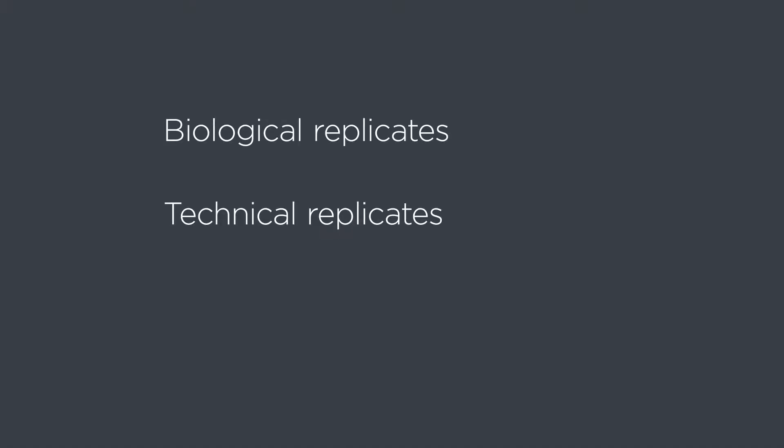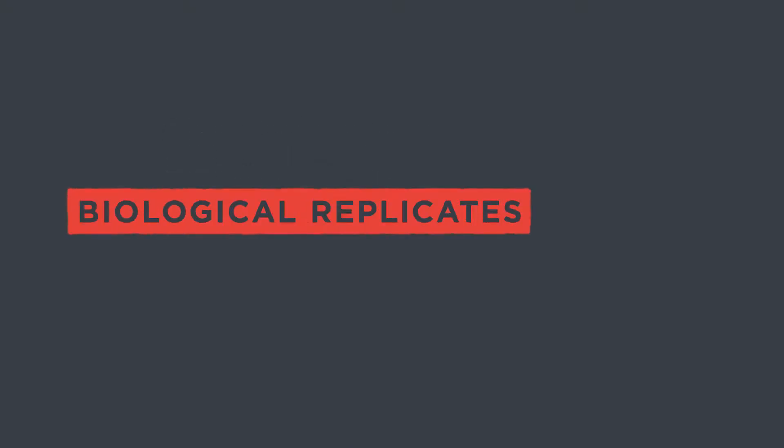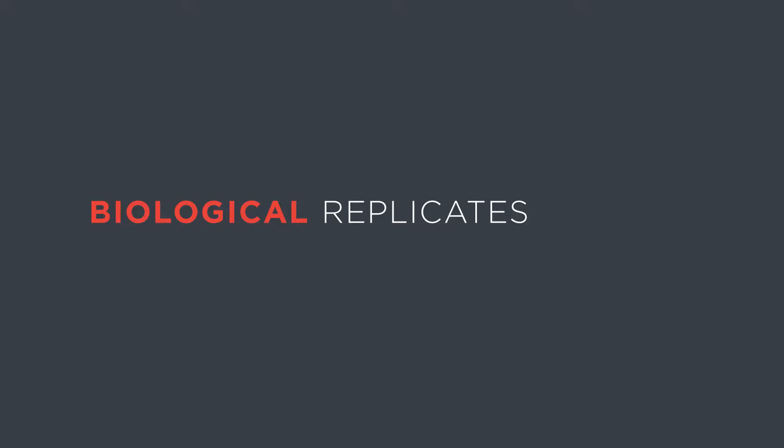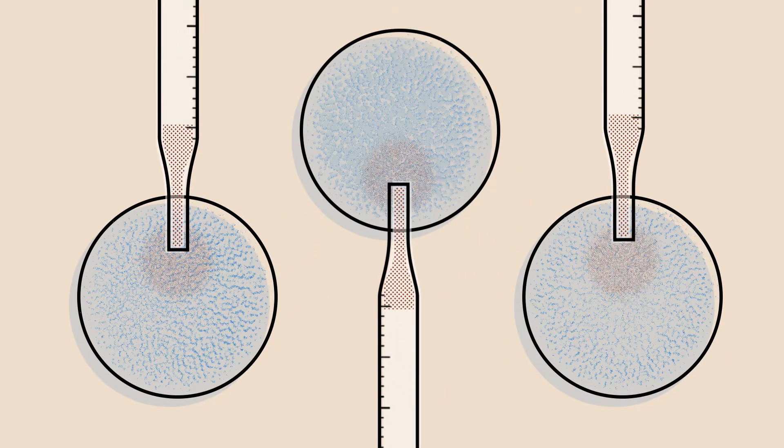Replication comes in many forms: a biological replicate, a technical replicate, and a repeat or independent experiment. Biological replicates are parallel measurements of biologically distinct samples — there are a number of samples in each group, which could be an experiment or a control. An example of biological replicates are distinct plates of cells that are treated in the same way. For example, you may take an initial batch of HeLa cells, divide it into three different plates, and then perform experiments on those three different plates.